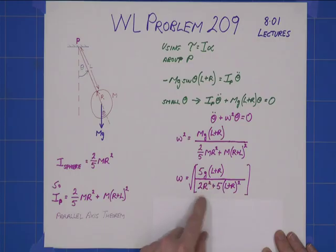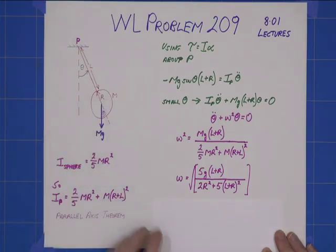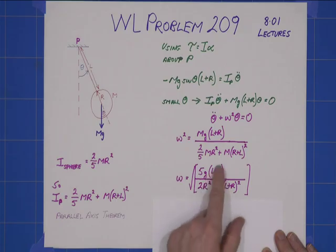then I will actually get 5s will cancel out, the rs of course become 0, and I will get ω equals root g over l, which is what I would expect for a point mass. But for our situation, r is not 0, so we get that.